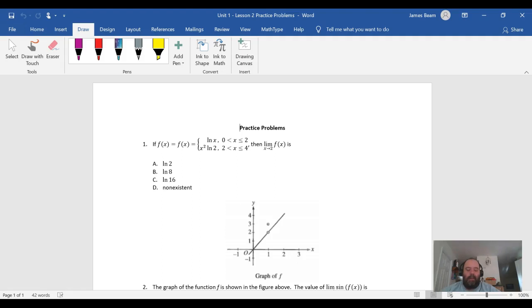The natural log of two is what you get in the first one. So the limit as X approaches two from the left is going to be the natural log of two. What we just said here is that the limit as X approaches two from the left of the natural log of X is equal to the natural log of two.